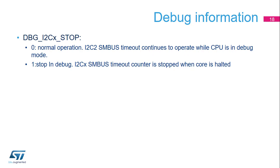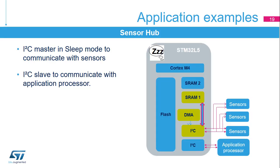Here is an example of a sensor hub application that requires several I2C peripherals. One or several I2C masters are used to interface with external sensors, and an I2C slave is used to communicate with the application processor.